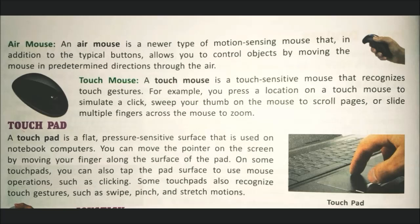Touch mouse: a touch mouse is a touch-sensitive mouse that recognizes touch gestures. For example, you press a location on a touch mouse to simulate a click, swipe your thumb on the mouse to scroll pages, or slide multiple fingers across the mouse to zoom in and zoom out. This mouse follows your fingers and gestures as you move on its surface.